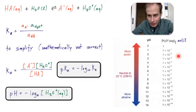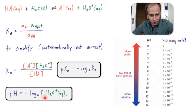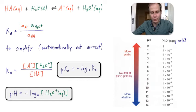Hydronium concentrations increase by one order of magnitude per pH unit. For example, at pH 6 the concentration is 10⁻⁶ mol/L, but at pH 2 it's 10⁻² mol/L. So pH 2 has 0.01 mol/L of hydronium ions — a relatively high concentration. At pH 0, you have one mole per liter of hydronium ions. At alkaline pH values, hydronium ion concentrations are very, very low.